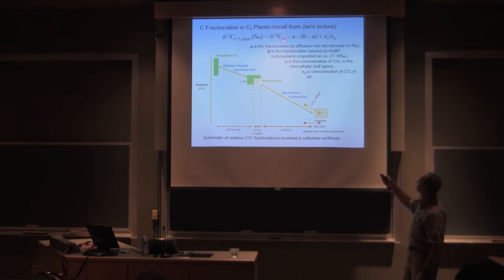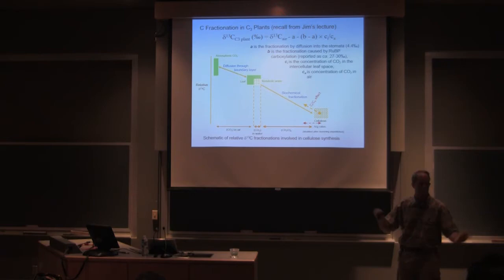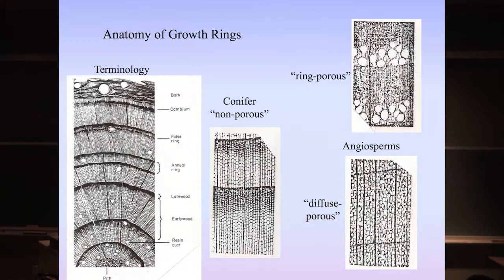The isotopic composition of carbon is a function of the air plus the diffusion fractionation, the rubisco fractionation, CICA. Can I leave this? Everybody got it? Okay.